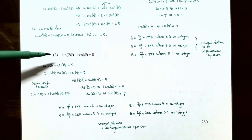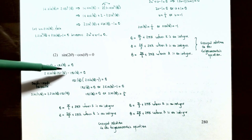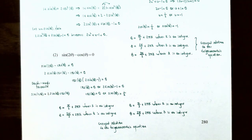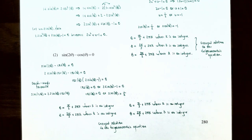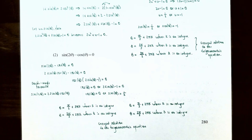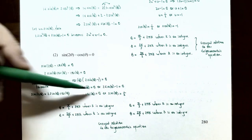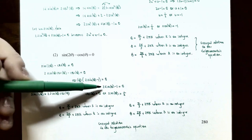Number 2: solve the equation sine of 2theta minus cosine of theta equals zero. Notice sine of 2theta involves a double angle. Using the double angle formula, sine of 2theta equals 2 sine theta cosine theta, so we replace it: 2 sine theta cosine theta minus cosine theta equals zero. Both terms have cosine of theta in common as the GCF, so factor it out: cosine of theta times (2 sine theta minus 1) equals zero.